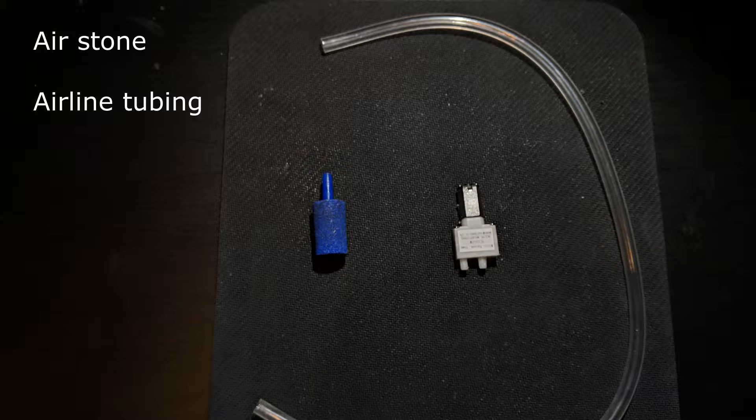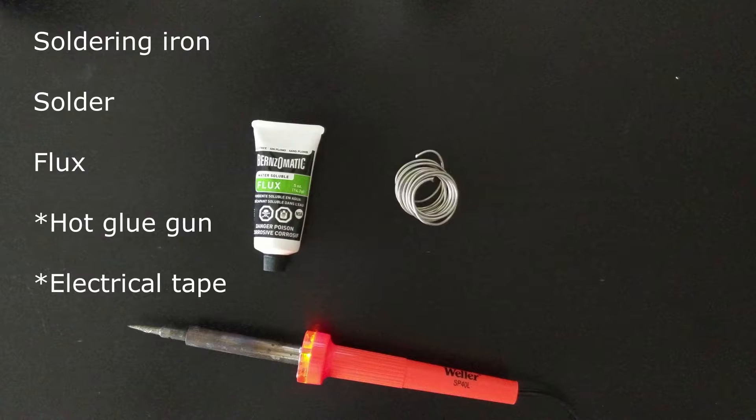Other materials needed for the air pump are airline tubing and an air stone. Additional materials used to put it together are a soldering iron, solder, flux, hot glue, and electrical tape.